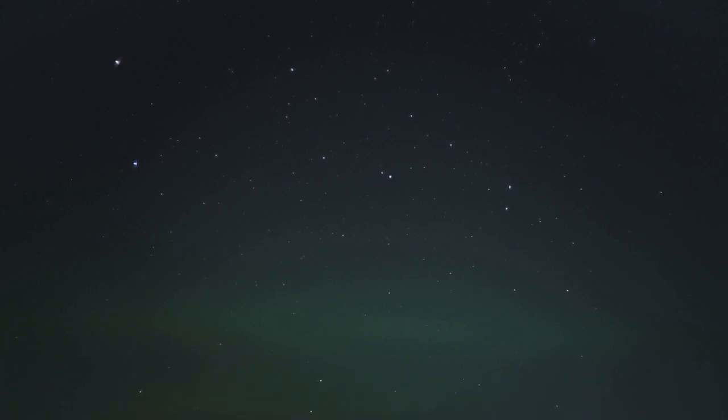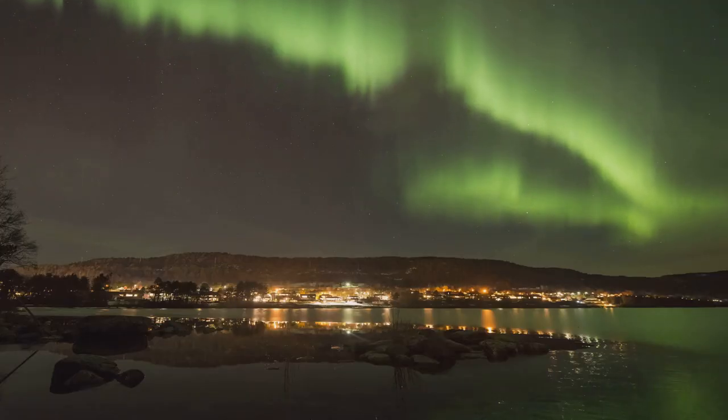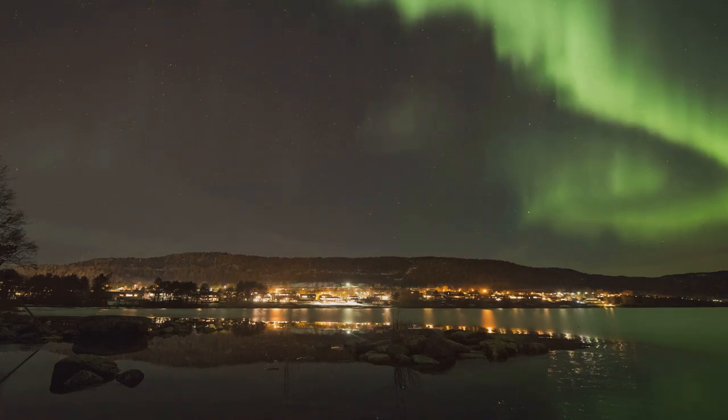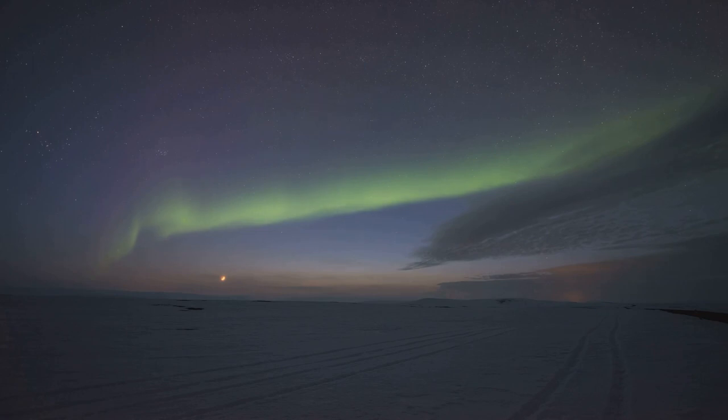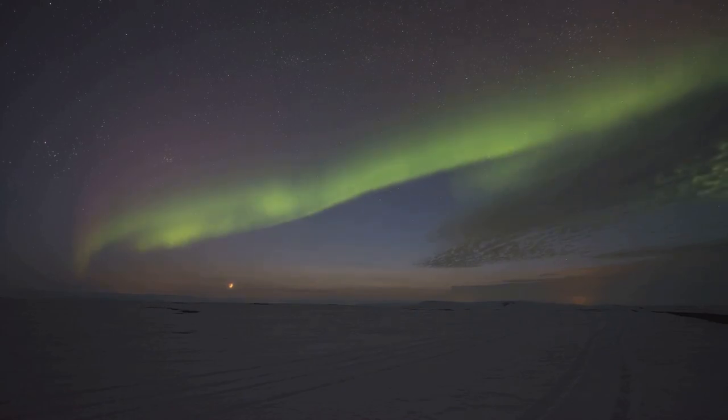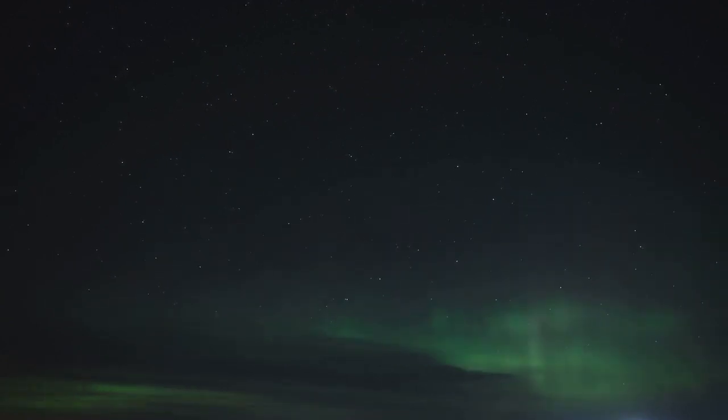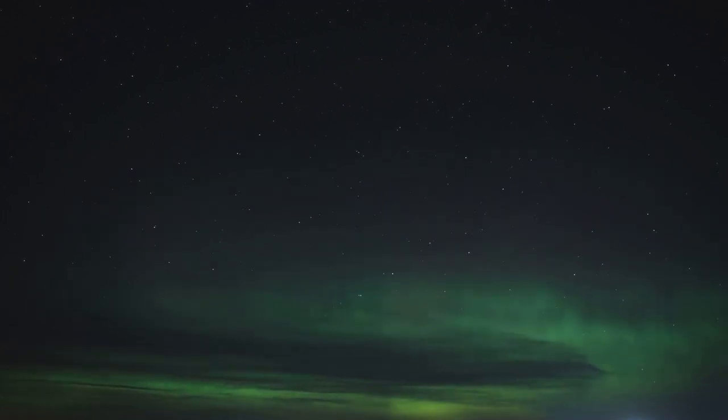These lights are more than just a beautiful spectacle. They are a visual representation of the complex interaction between the Sun and Earth. They show us how even in the vastness of space, everything is interconnected. The Sun, over 93 million miles away, can touch our world in such a visually stunning way. The Northern Lights are a reminder that our planet is part of a dynamic, ever-changing universe. They show us that even the darkness of space is full of light, color, and beauty. They are a testament to the intricate and delicate balance that exists within our universe, a balance that makes life on Earth possible. The Northern Lights, a stunning spectacle of nature, remind us of the dynamic and ever-changing nature of our universe.